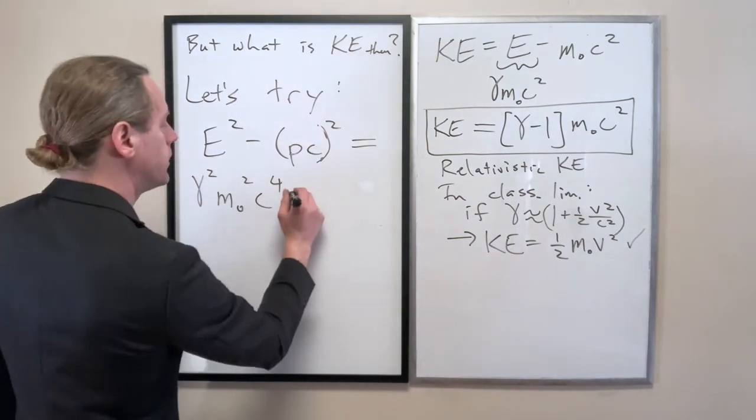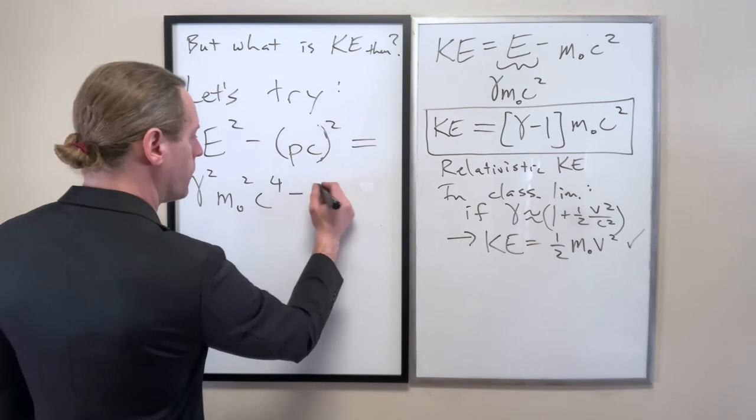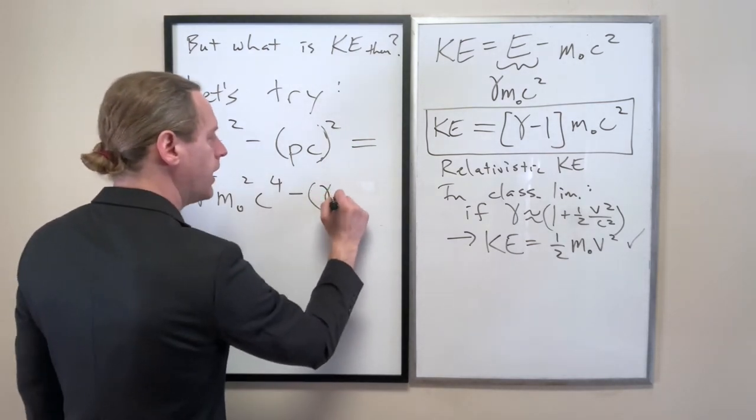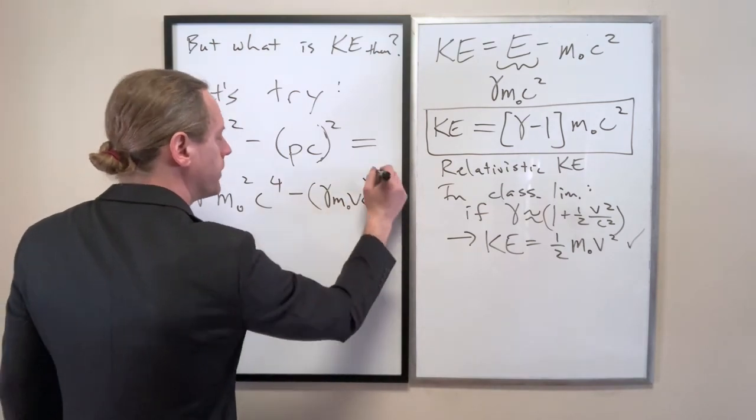And this is, remember, P is MV, or we have instead of M we'll write gamma M naught V, C, all that squared. And actually I'll write like this here.